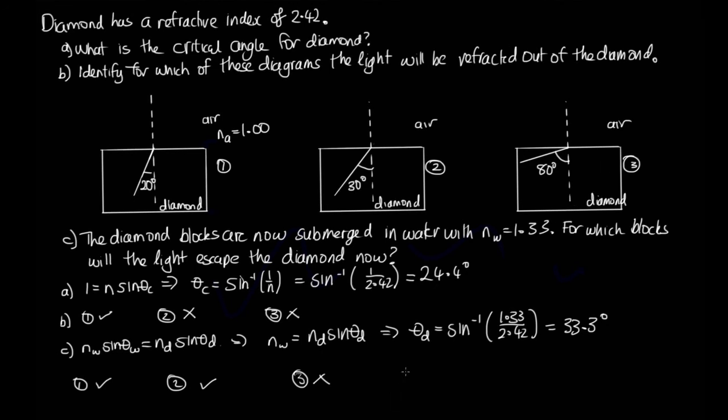Now, one thing that is worth noting is when it hits it at 80 degrees, it actually gets reflected back off this boundary like this. And this angle here is 80 degrees. So this is known as total internal reflection. So total internal reflection occurs when we hit the boundary at an angle greater than the critical angle.